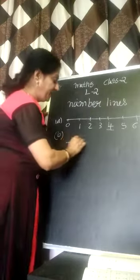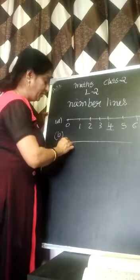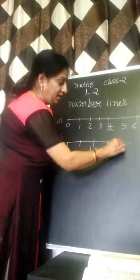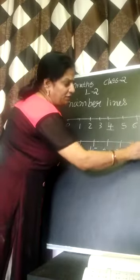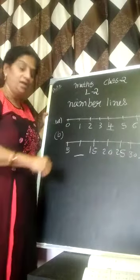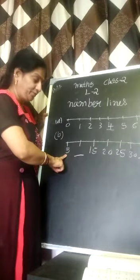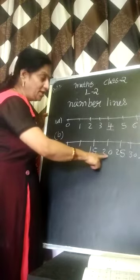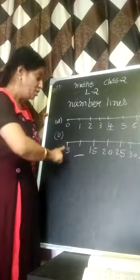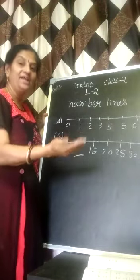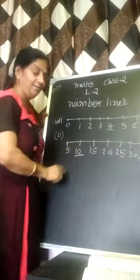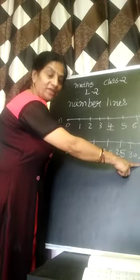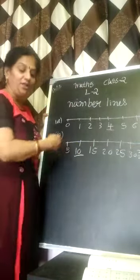Here skip counting will also be there. For example, I am going to write: 5, 15, 20, 25, 30 — and I don't know what to write here. So now, can you see this? Here 5, then no number, but here 15. So skip counting of 5 numbers is there. So after 5: 6, 7, 8, 9, 10 — you have to write 10 here. So: 5, 10, 15, 20, 25, 30 — what will come next? 35.